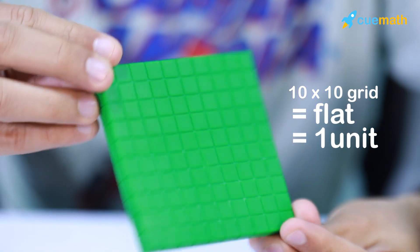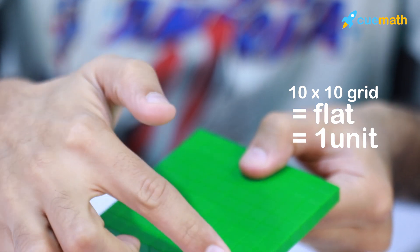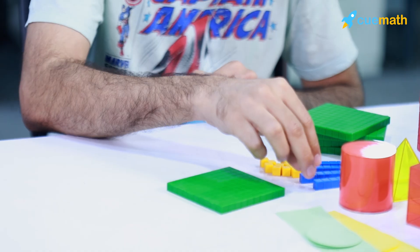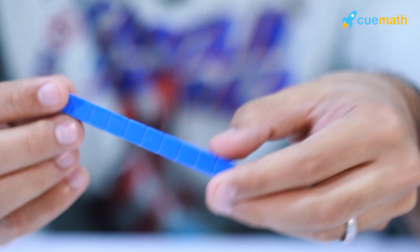And we know that this is wrong. At Cuemath, with the help of various learning aids, children build strong conceptual understanding and are able to answer such questions properly. Let's take a 10×10 grid, something we call flat, and consider it one single unit.